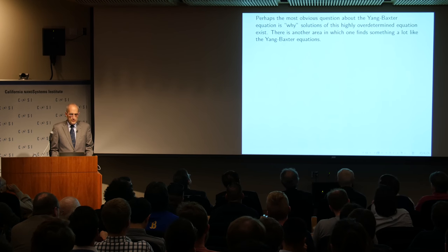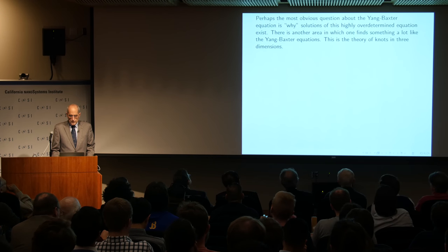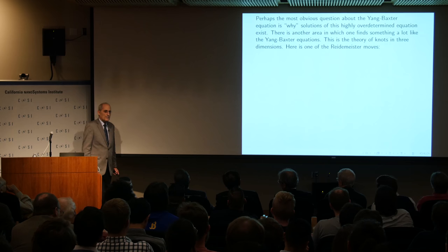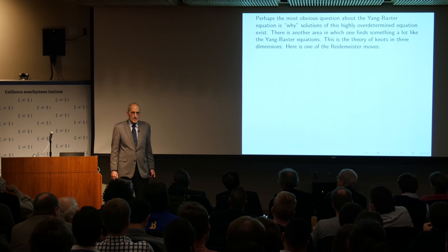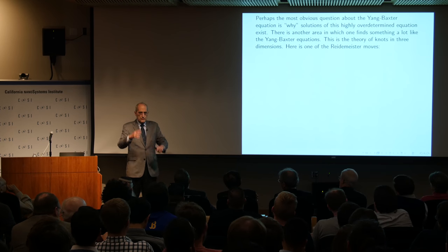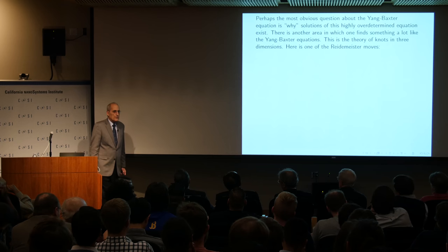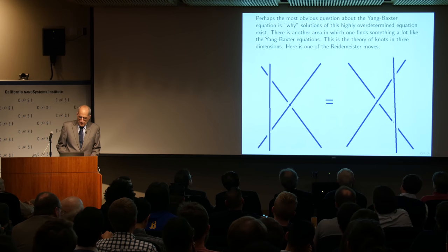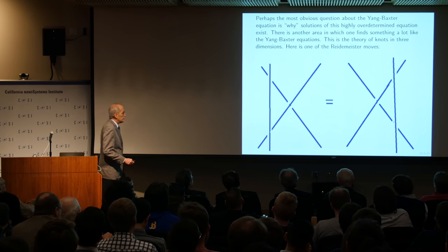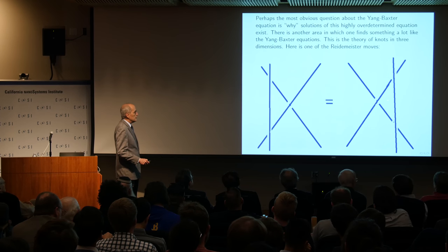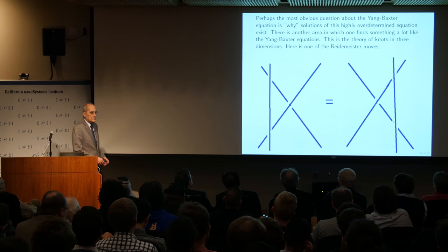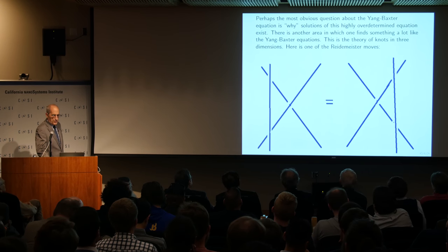Instead of going further in that direction, I want to head for our main theme: Costello's perspective on why the solutions of this highly over-determined equation exist. There's another area where one finds something a lot like the Yang-Baxter equation — that's the theory of knots in three dimensions. When you study knot theory, a knot can be a horrible tangled mess of strings, and to know whether two knots are equivalent you try moving the strands around using Reidemeister moves. Here's the most important Reidemeister move: this picture is equivalent to this one because you can move a vertical strand to the right without intersecting the other two.